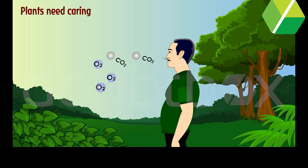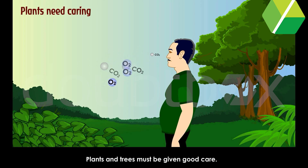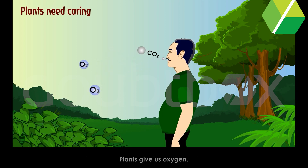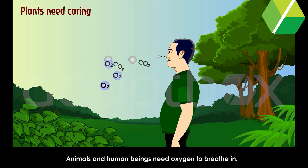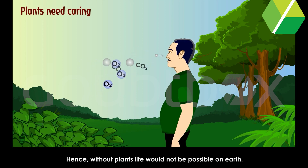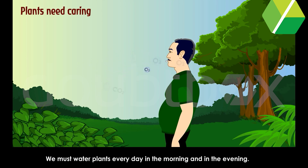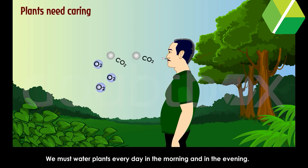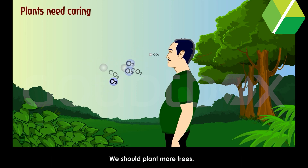Plants need caring. Plants and trees must be given good care. Plants give us oxygen, and animals and human beings need oxygen to breathe in. Hence, without plants, life would not be possible on earth. We must water plants every day, in the morning and in the evening. We should plant more trees.